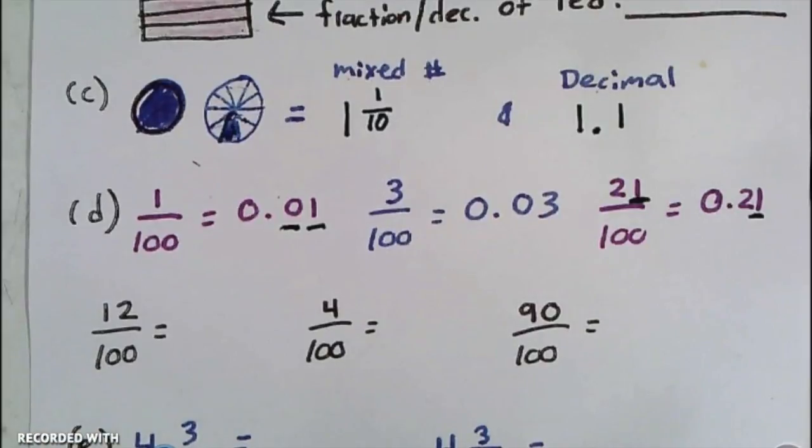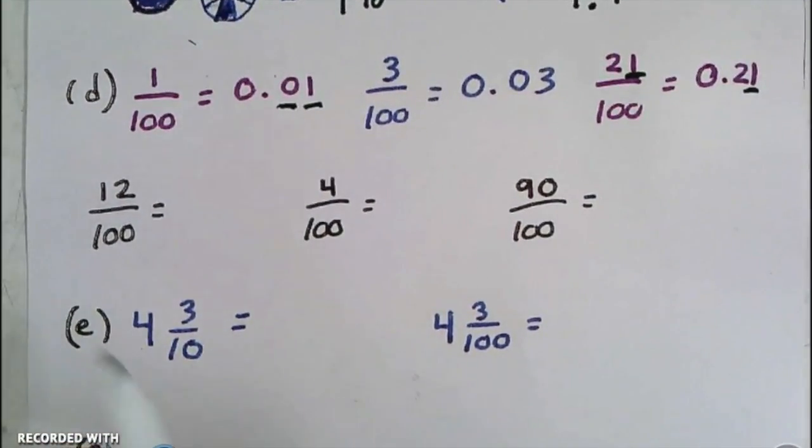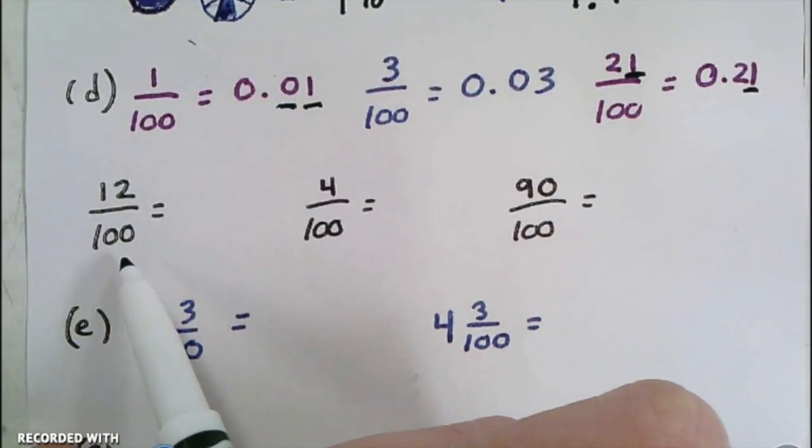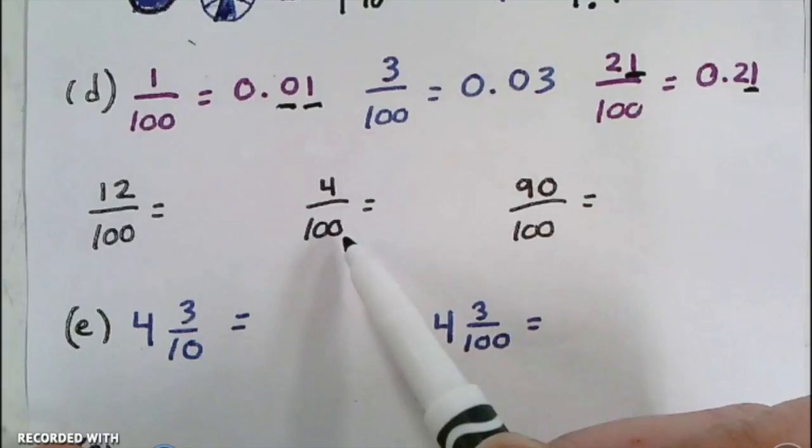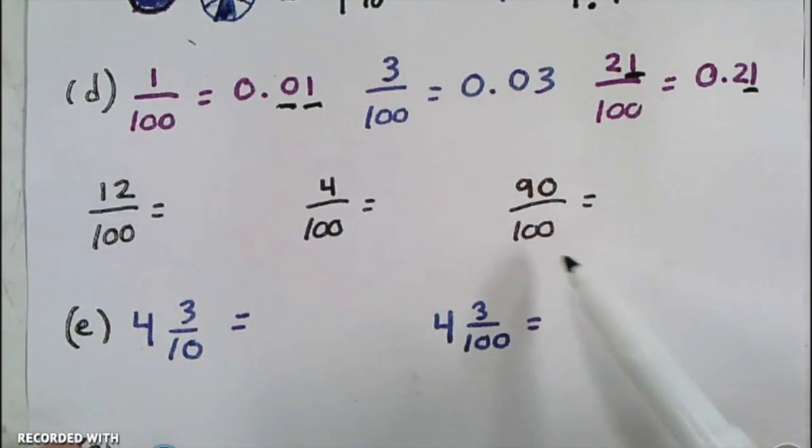So now, if we were to apply it to these ones, we've got 12 hundredths. How am I going to write that? Good—0.12. Four hundredths, try that one on your own. And 90 hundredths, try that one on your own. For that one, if you end up with a zero hanging off on a decimal, you